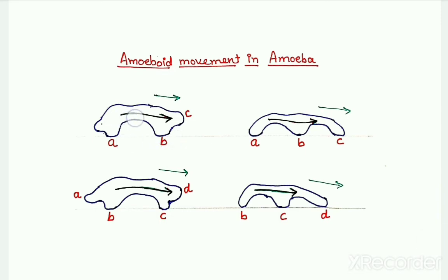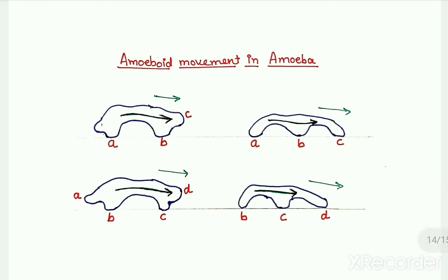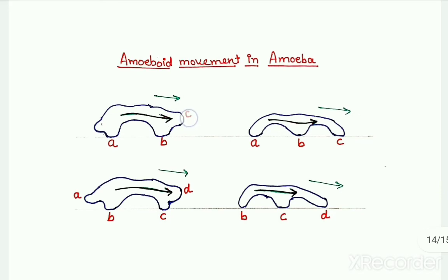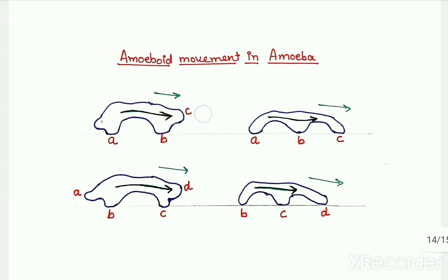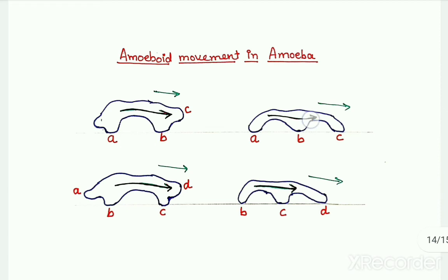With continuous movement of the plasma sol, with forward movement of the plasma sol, there arises a bulge or a new pseudopodium, where we have the C term given. This C pseudopodium with time keeps on growing and keeps on elongating.